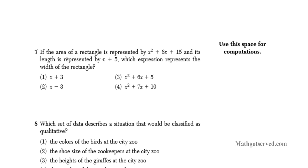Let's take a look at question 7. It says, if the area of a rectangle is represented by x squared plus 8x plus 15, and its length is represented by x plus 5, which expression represents the width of the rectangle? So we know if we have a rectangle, the dimensions, the formula for area is length times width, right? So this is the area right here, and this is the length, and this is the width. The area is basically length times width.